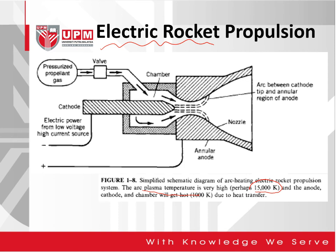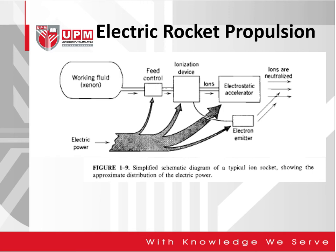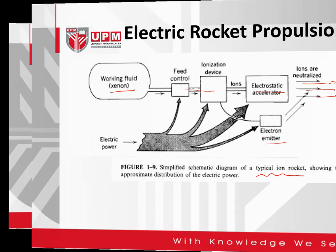More and more spacecraft, especially satellites, are using electric rocket propulsion to produce thrust. Another simplified schematic diagram also shows electric rocket propulsion — a typical ion rocket showing the approximate distribution of electric power. The working fluid is xenon, which goes into the feed control and ionization device, followed by the electrostatic accelerator, and this is how the thrust is produced.